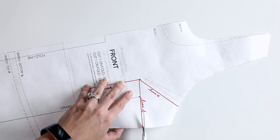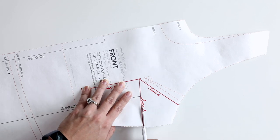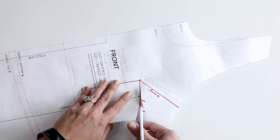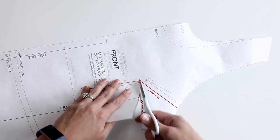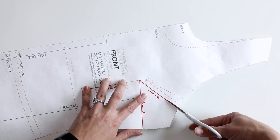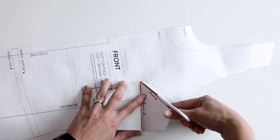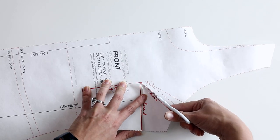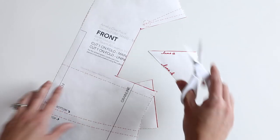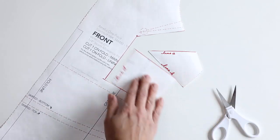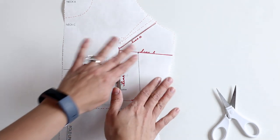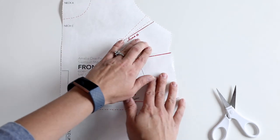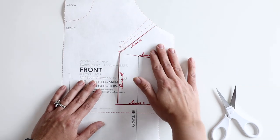This is going to give us what we need to slash and spread our pattern. And then of course, all of this will be taped back together once we are finished with this adjustment. You are welcome to keep little edges of things together so that you kind of make hinges, but for the sake of this tutorial, I have it all free.